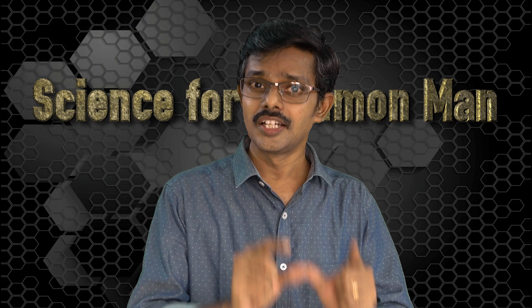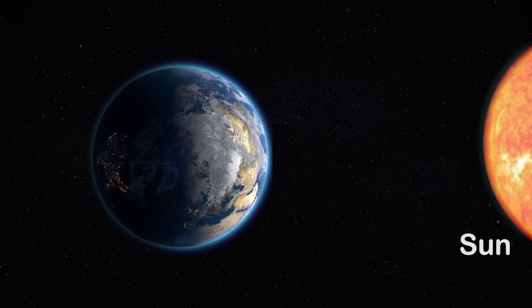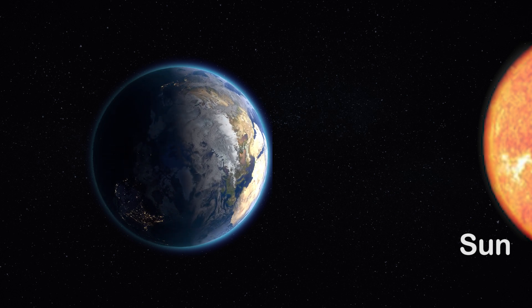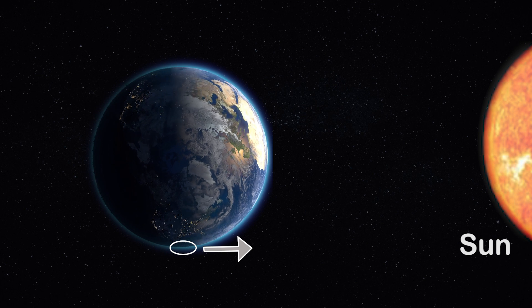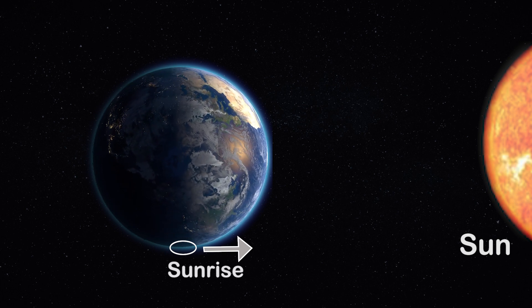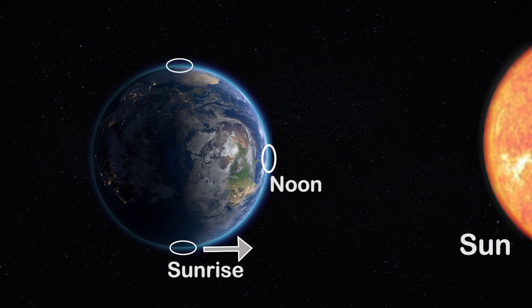Now let us see at what locations and at what times we will be able to see these interesting phases of the Moon. It is interesting to note that if I am standing on the surface of the Earth, this is the time at which I will start seeing sunrise, and this is noon time, and this is the time of sunset.